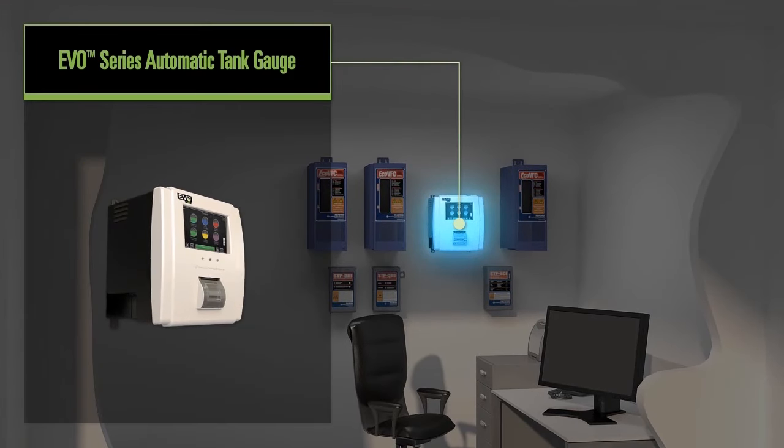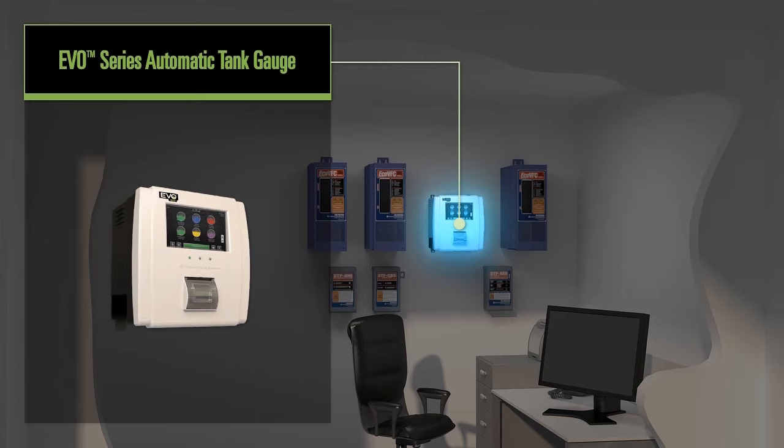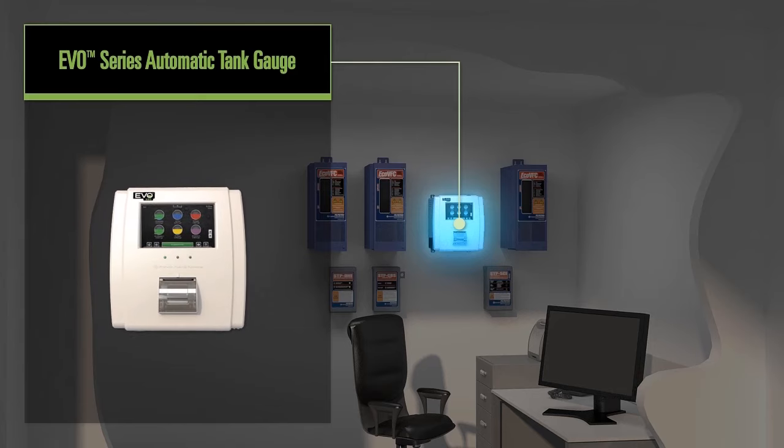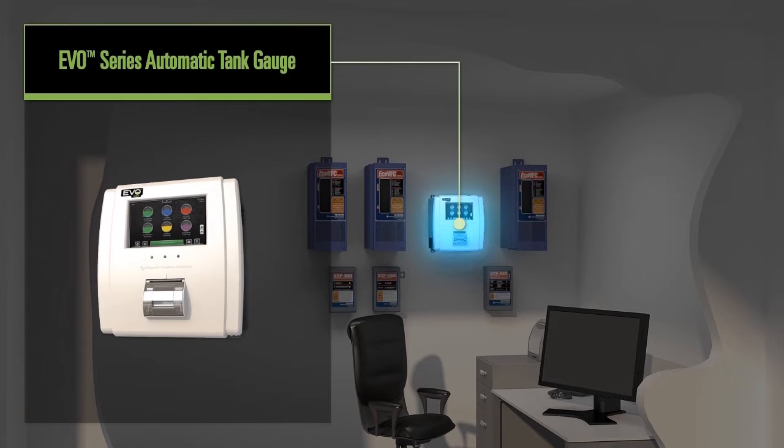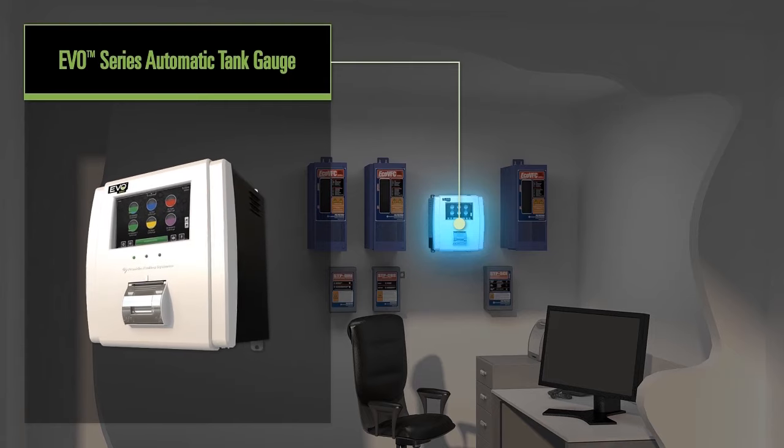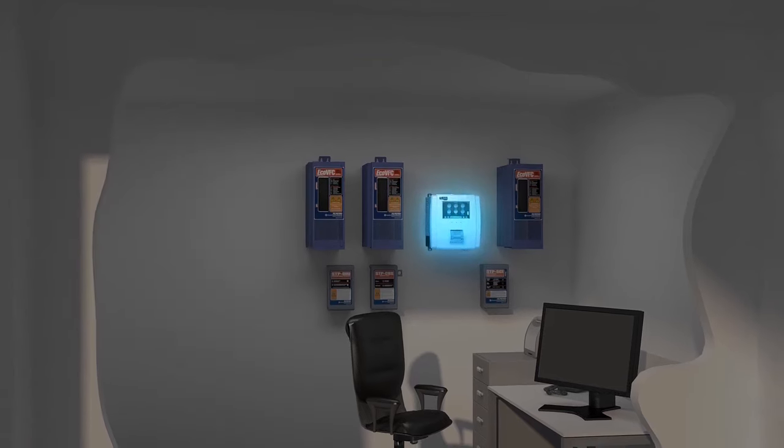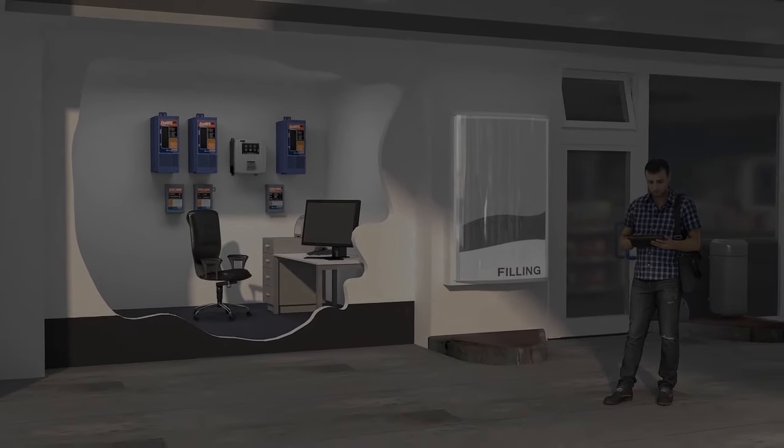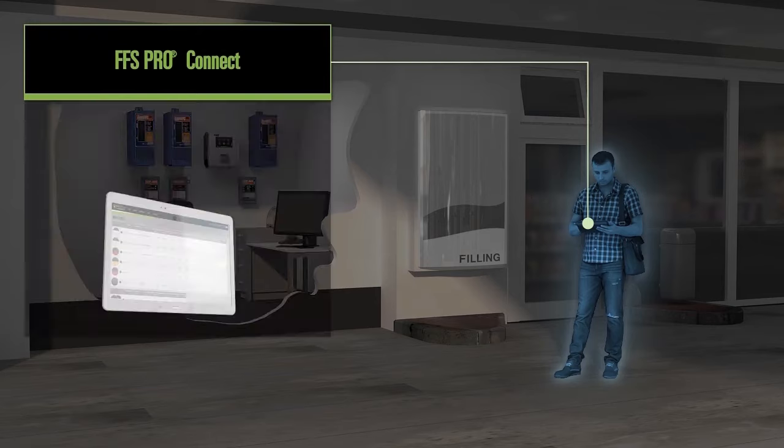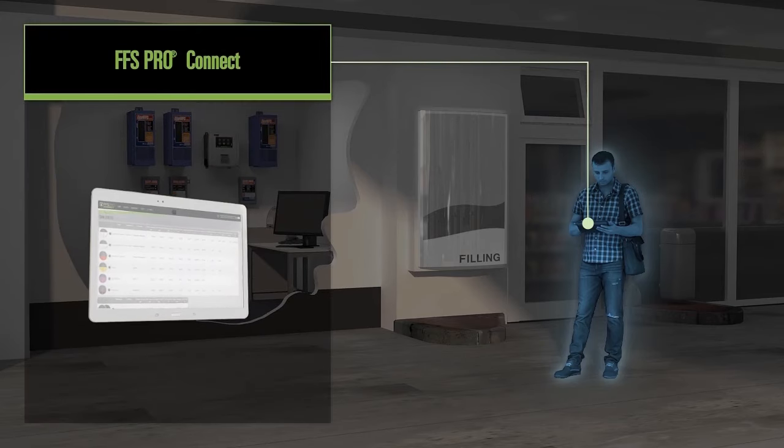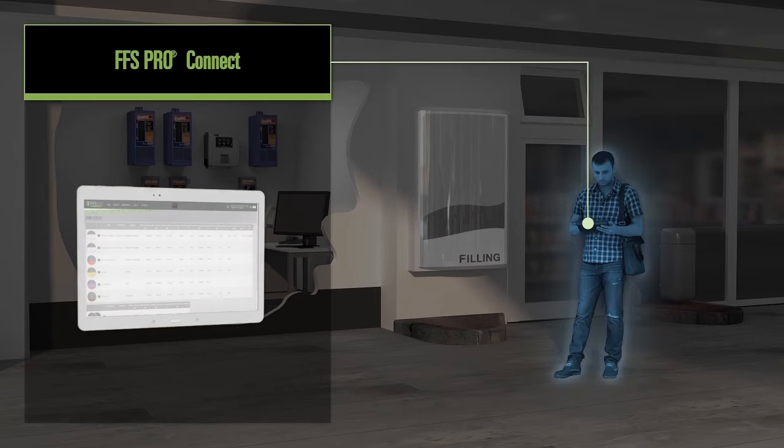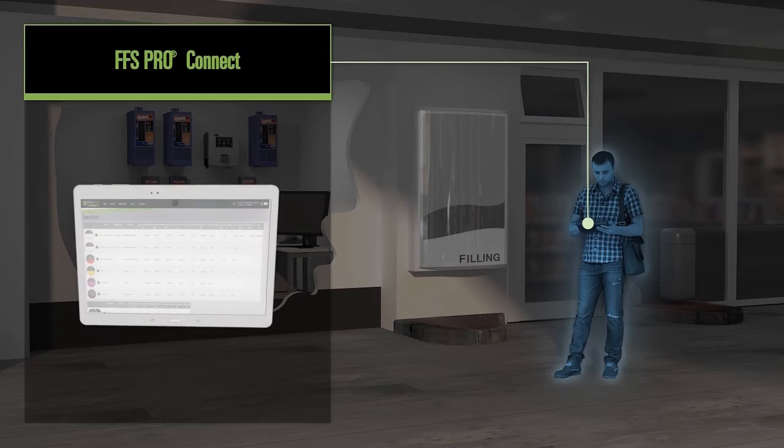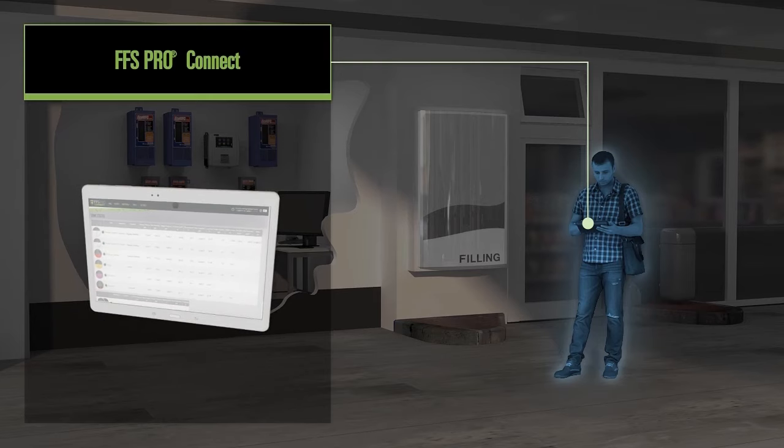Our EVO series brand of automatic tank gauges are the electronic consoles that reside in the back room of a fueling station. These devices are connected to probes and sensors throughout the system to relay vital data to the station owner. For users on the go, owners and operators can securely connect directly to their automatic tank gauge via any web-enabled device for centralized monitoring and data-driven decision making.